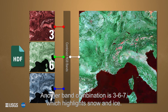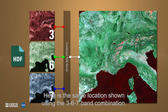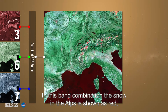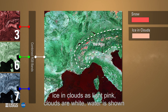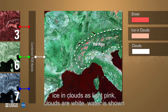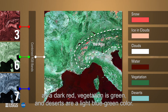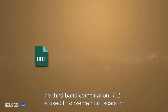Another band combination is 3-6-7, which highlights snow and ice. Here's the same location shown using the 3-6-7 band combination. In this band combination, the snow in the Alps is shown as red, ice and clouds as light pink, clouds are white, water is shown as a dark red, vegetation is green, and deserts are a light blue-green color.